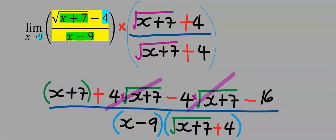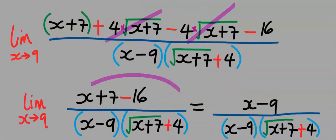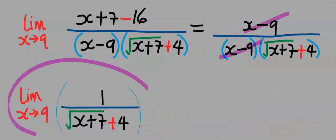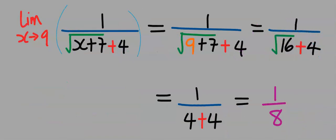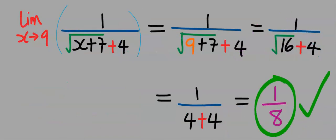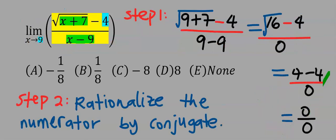Next, 4 times square root of (x+7) will cancel out minus 4 times square root of (x+7). We are left with the remaining function. We then take the limit of that remaining function — wherever we see x, we input 9. 9 plus 7 gives 16, and our answer is 1 over 8. From the options, our answer is B.